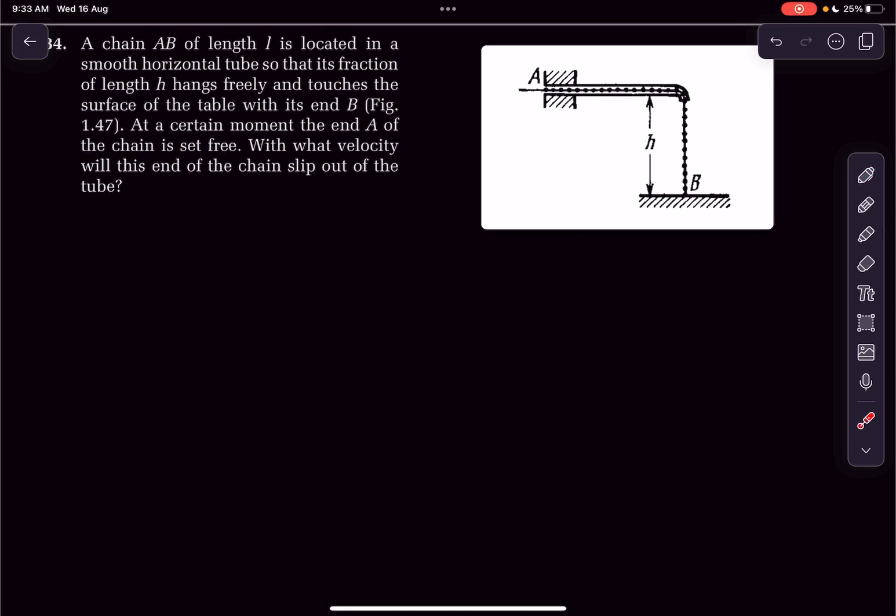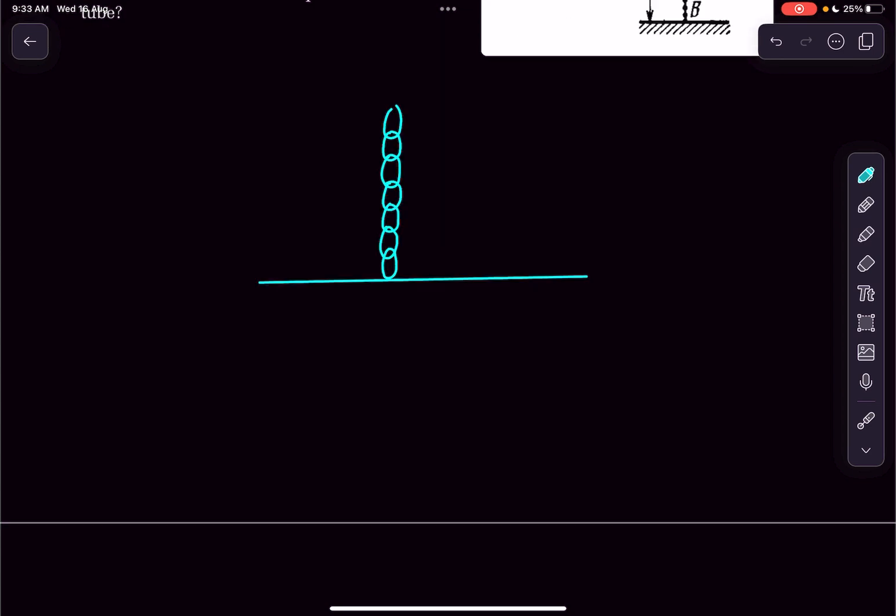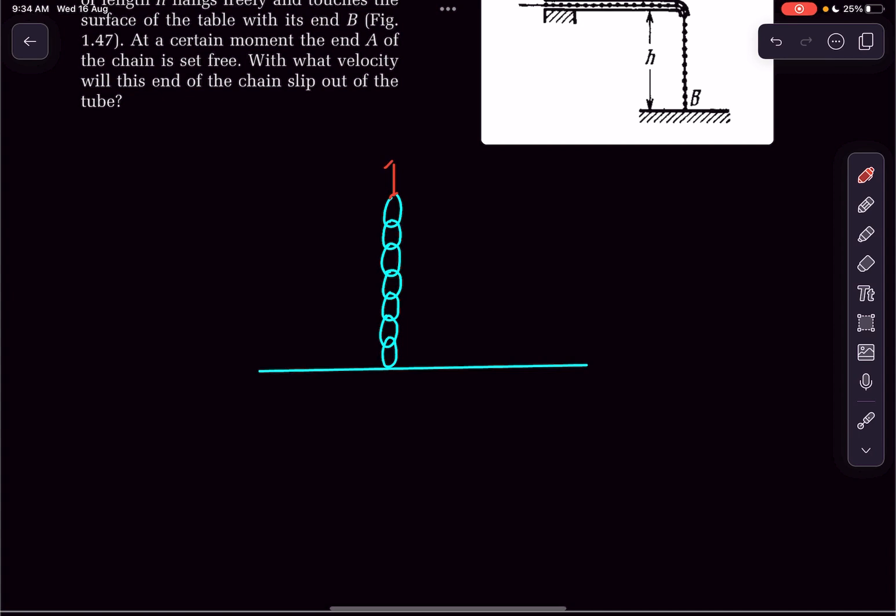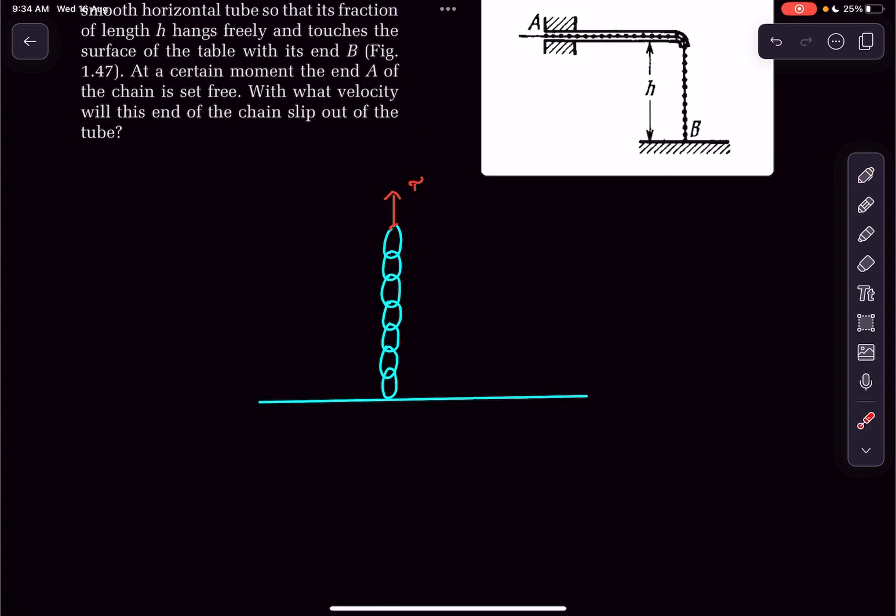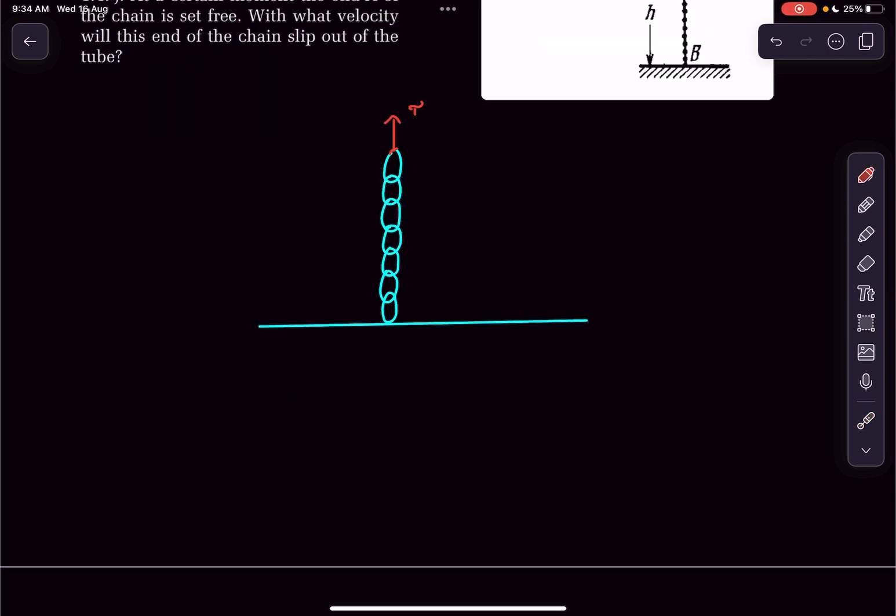First, let's draw the free body diagram of the vertical part of the chain. This is how the links of the chain look. Clearly, there will be some force, let's say T, acting on the uppermost link, which is acted upon by the horizontal link. I want you guys to observe something.